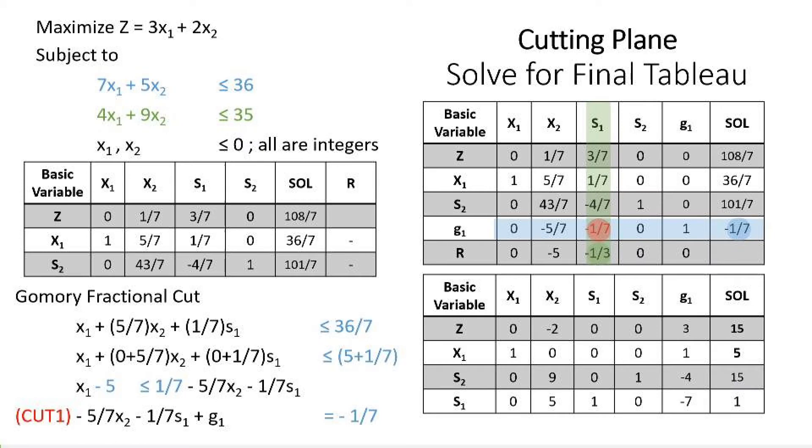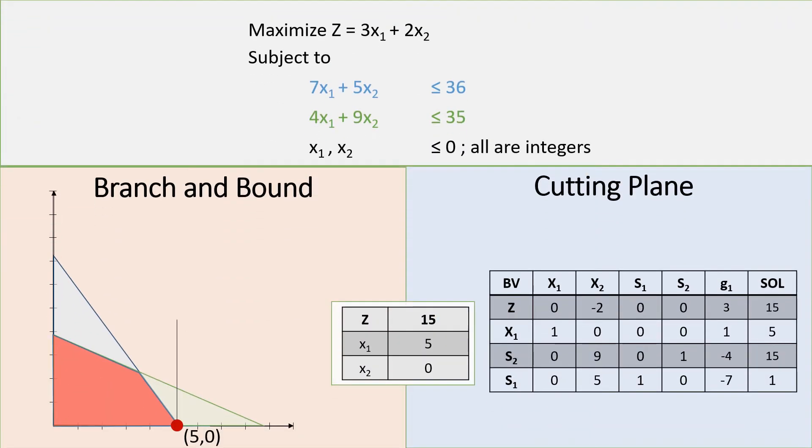This will be our final tableau with our optimal integer solution: x sub 1 equals 5 and z value of 15. As you can see, we have arrived with the same answer using both branch and bound and cutting plane method.